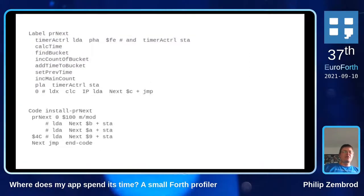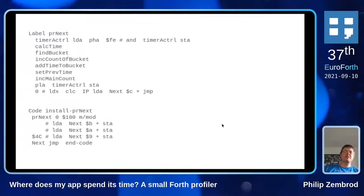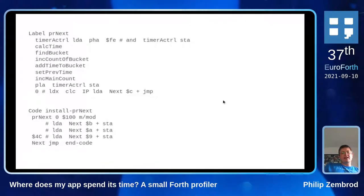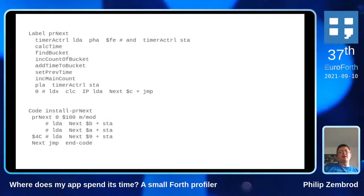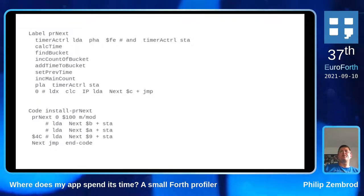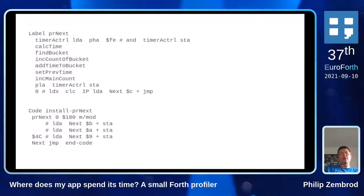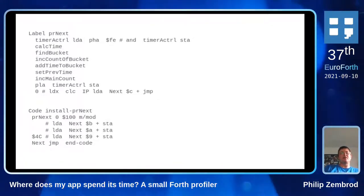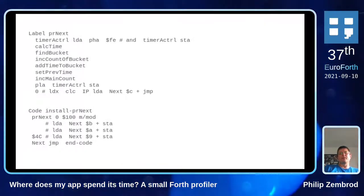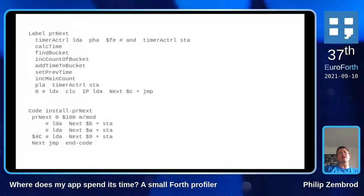This is what the patched next routine looks like. What you saw were macros for speed, not subroutines — macros for speed and testability. The overall next routine calculates the time from last time, finds the bucket, increments the count of that bucket, adds the time to that bucket, prepares the next time comparison, and increments the main next-cycle counter. The first and second-last lines switch off the timer during accounting, because we don't want to measure the time we spend measuring. The last bit is the part of the next routine that was patched over, and the final bit is the patch routine itself.